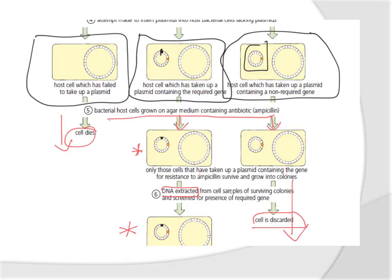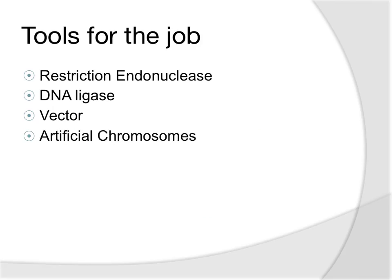What about the term recombinant DNA technology? This cell - or rather the DNA inside it - is referred to as recombinant DNA, because you've recombined the DNA inside the cell. Now we'll look in more detail at the tools used for producing recombinant DNA: the restriction endonuclease, which is a type of enzyme, the DNA ligase, and we'll also talk about vectors and artificial chromosomes.